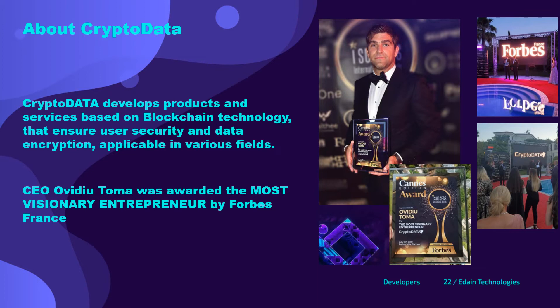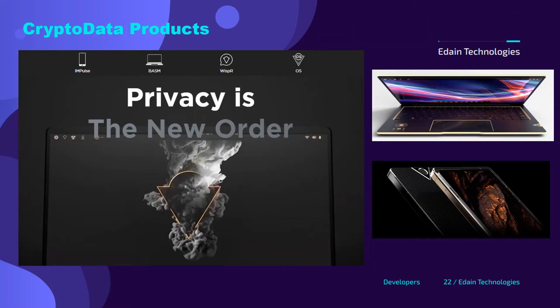Looking at Crypto Data's official website, cryptodata.com, they have two blockchain-based products. One is the BASM laptop, which can be purchased by Edain customers. They also have a smartphone called Impulse, which we can purchase from the Crypto Data website and which may become available to Edain customers as well.